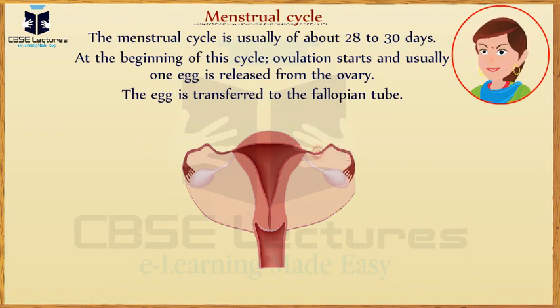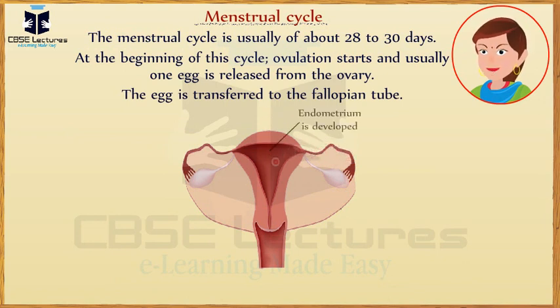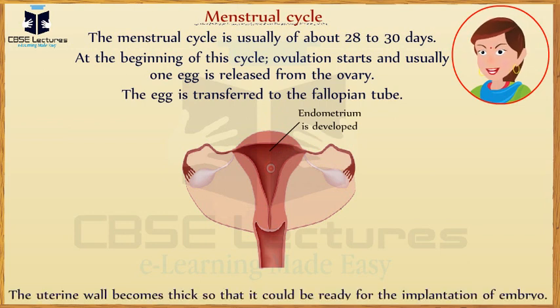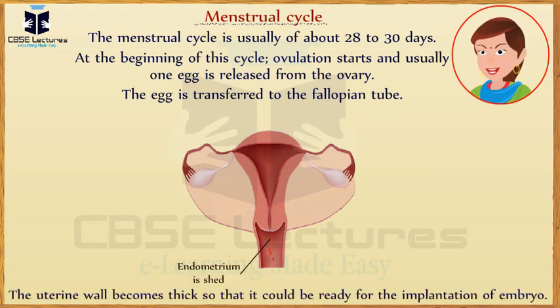The uterus gets ready in anticipation of a possible pregnancy. The uterine wall becomes thick so that it could be ready for the implantation of the embryo.